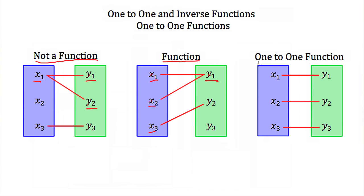A one-to-one function is when each x value or each domain value has its own personal y value or range value. None of our x values will ever equal the same value of y. So x1 is equal to y1, x2 is equal to y2, x3 is equal to y3, and none of them share.